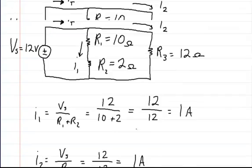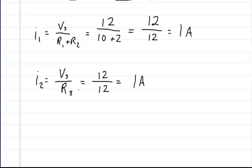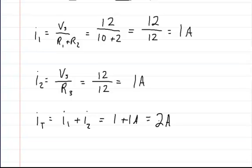So now we've solved for the current I1 and I2. We also know that the total current is going into both of these branches and it's getting split up. Since we already know the current in each branch, all you have to do is add up both currents and it's going to give you the total current IT. So IT is equal to I1 plus I2, for a total of 1 plus 1 amp.